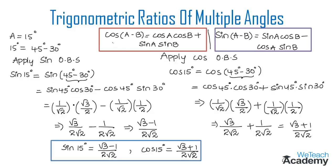Make a note of the formulas: cos(a - b) = cos a cos b + sin a sin b, and sin(a - b) = sin a cos b - cos a sin b. Learn the values of trigonometric ratios for the standard angle 15°: sin 15° = (√3 - 1) / (2√2) and cos 15° = (√3 + 1) / (2√2). This was a basic introduction on the trigonometric ratios for standard angle 15°. Hope you understood the concept.